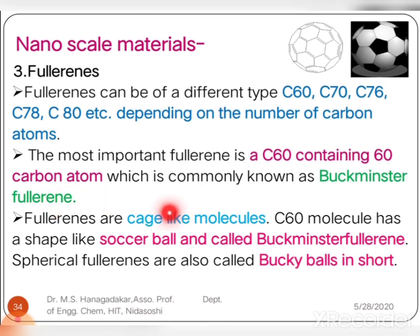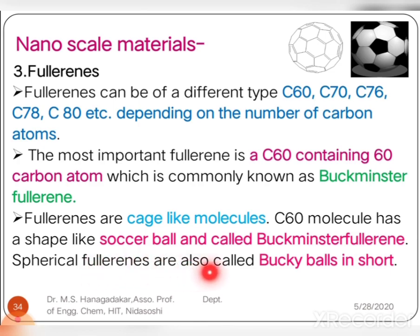The C60 fullerene molecule looks like a cage-like structure with 60 carbon atoms and has the look of a soccer ball. It is also called Buckminsterfullerene, and in its spherical shape it is also called a buckyball for short.